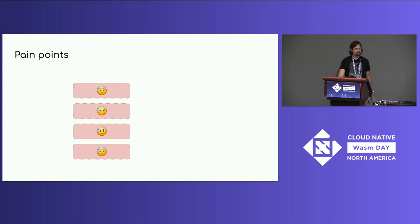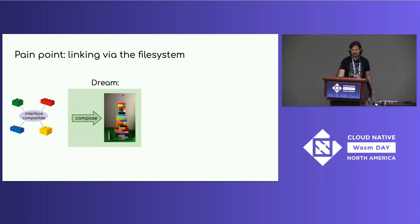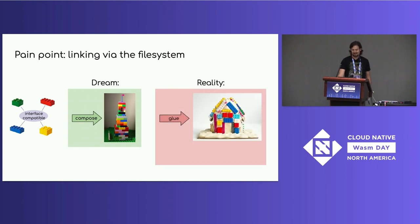I'll summarize this with four high-level pain points and four proposed design alternatives. Our first pain point is linking via the file system. A common experience is you have some software components that seem interface-compatible, so you should be able to snap them together, but the reality involves a lot more glue code. The reason is that in addition to these explicit interfaces, there's a file system that everything is kind of colliding with, and a lot of that glue code is working around that.